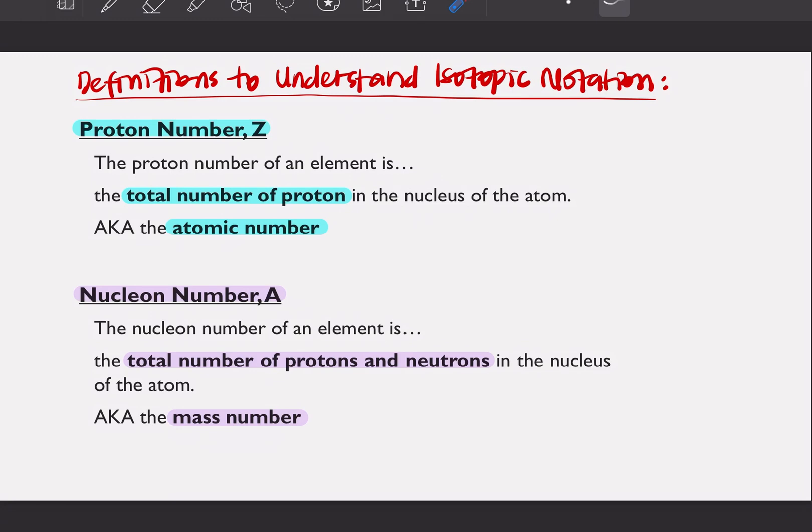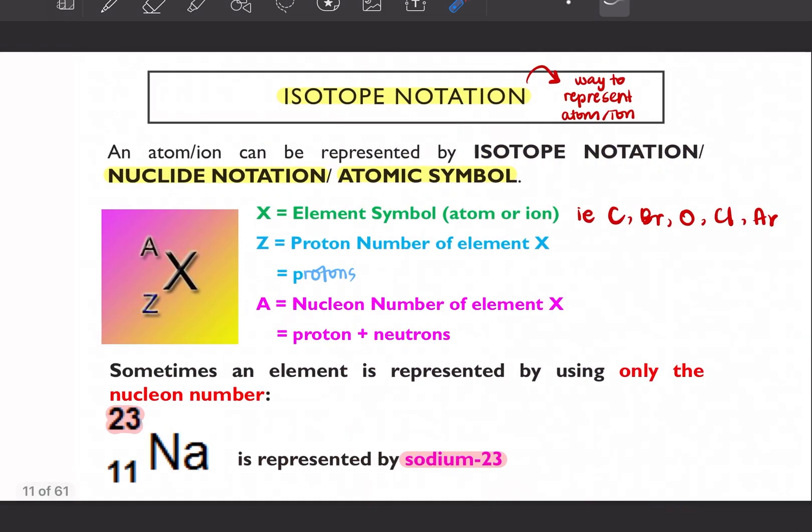So now that we know these two terms, we can look at isotopic notation or isotope notation. So isotope notation is actually a way to represent atom or ion. Macam awak student, macam ni nak represent diri awak dengan nombor matrix contohnya. So basically isotope notation ni untuk kenal atom dengan ion awak. There are two other names for isotope notation.